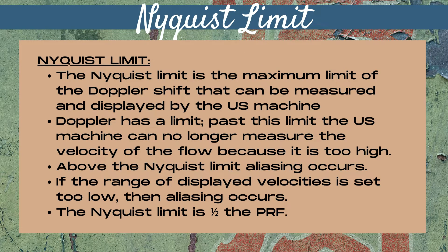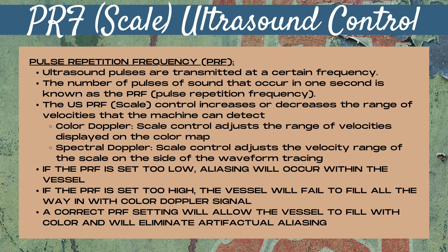Now let's talk about the Nyquist limit. Doppler has a limit, and past this limit, the ultrasound machine can no longer measure the velocity of the flow because it's too high. This limit is known as the Nyquist limit — it's the maximum limit of the doppler shift that can be measured and displayed by an ultrasound machine. Above the Nyquist limit, aliasing occurs. If the range of displayed velocities is set too low, you're going to see aliasing within your vessel. The Nyquist limit is half of the PRF, or pulse repetition frequency.